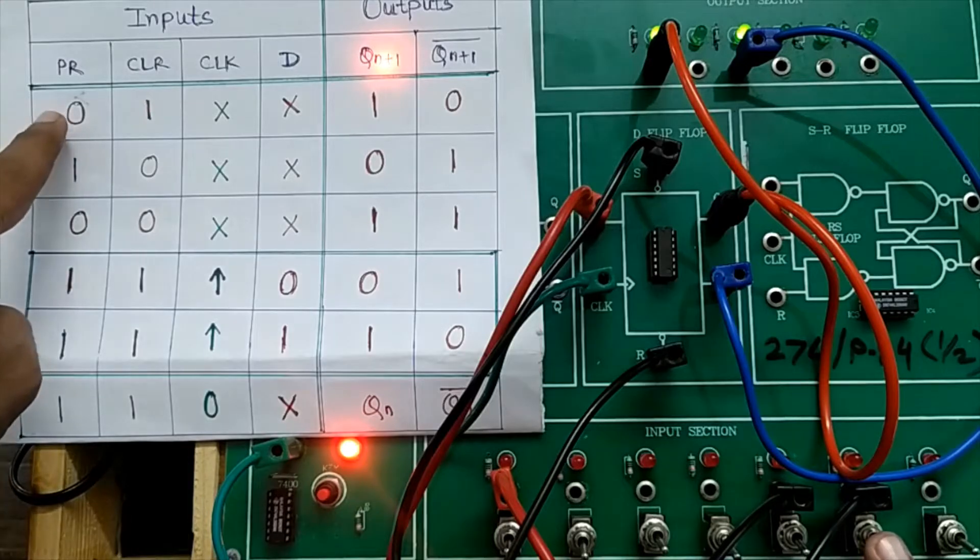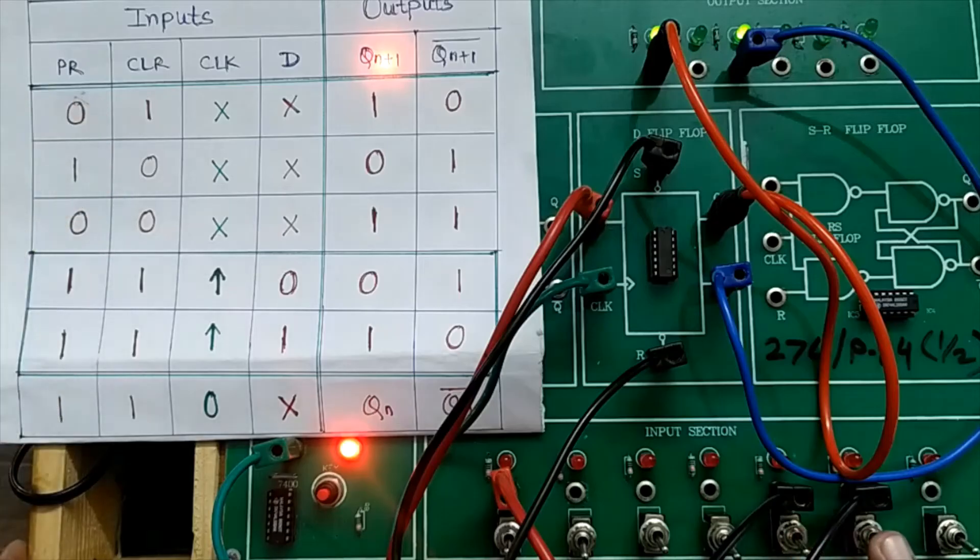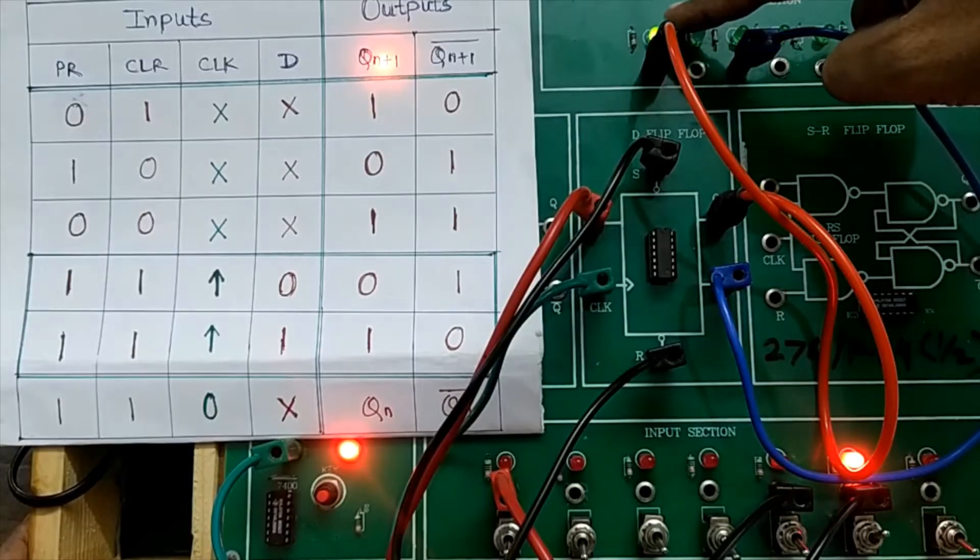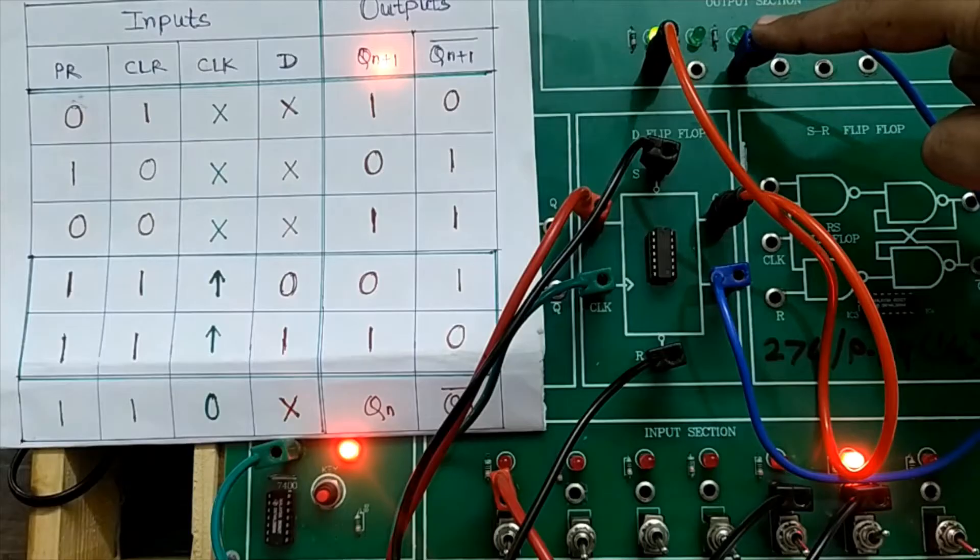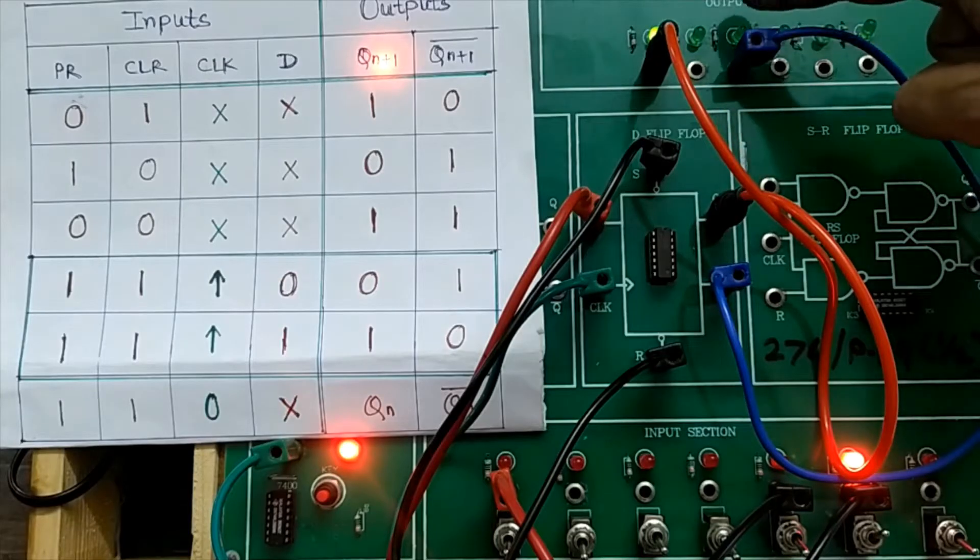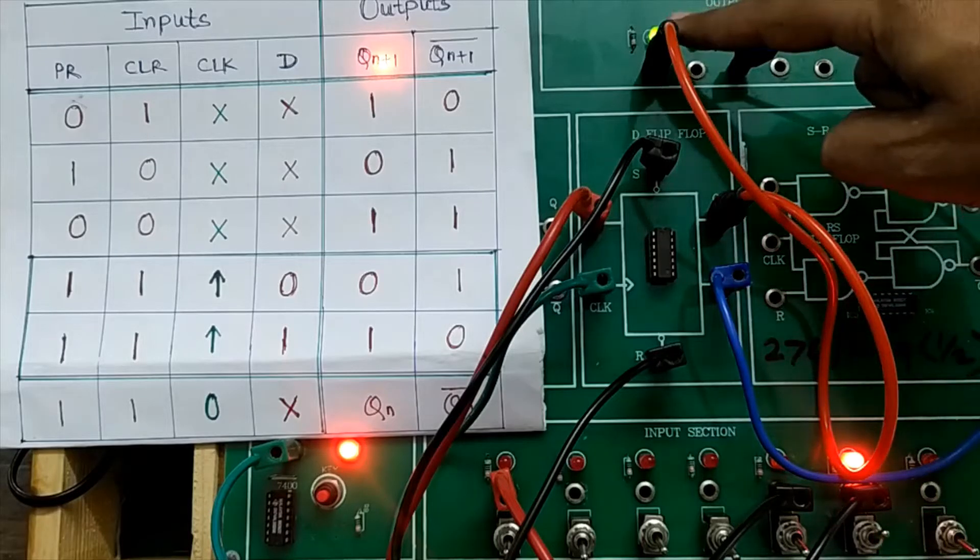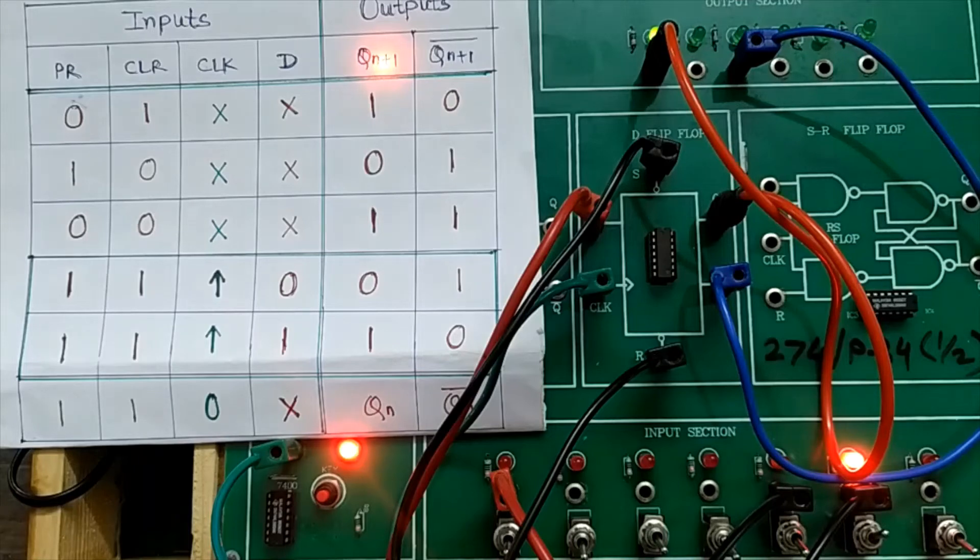In the first row, preset pin is kept zero. Preset is already zero. Clear is made one. Now we can observe the output that Q has become one. So Q is one and Q bar has become zero. It means that by applying a preset signal I have stored one in D flip-flop. That is the role of preset pin.